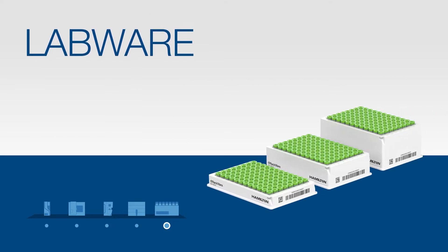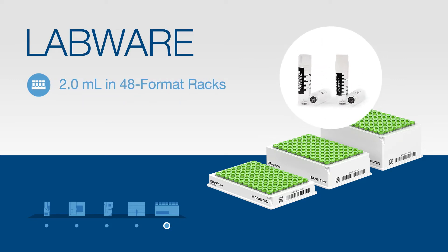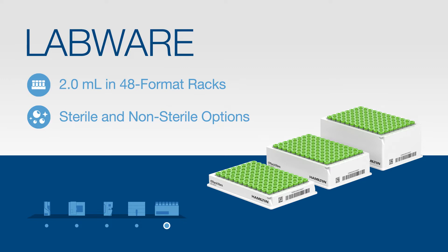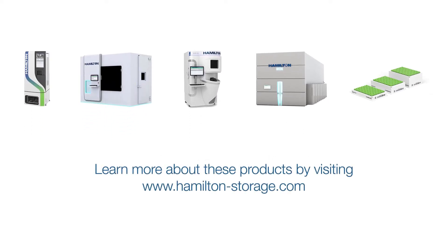In addition to our storage platforms, we also offer a growing line of labware. Use of Hamilton storage labware provides consistency and confidence when used in conjunction with our LabElite devices and other Hamilton products. Our labware is currently offered in 0.3, 0.6 and 1 milliliter internal threaded volumes in 96 format racks. We also offer 2 milliliter internal and external threaded tubes in a 48 format rack. These tubes are available in both sterile and non-sterile options and are sold in bulk or pre-racked. If you're interested in learning more about any of these products mentioned, please visit our website at www.hamilton-storage.com.